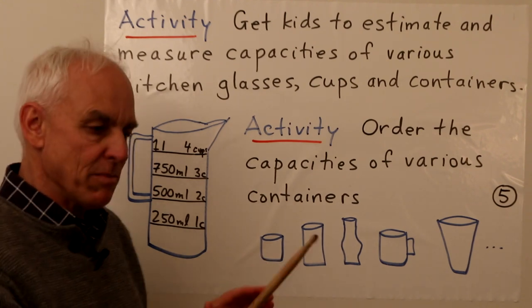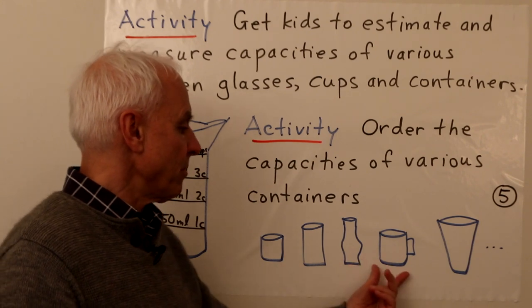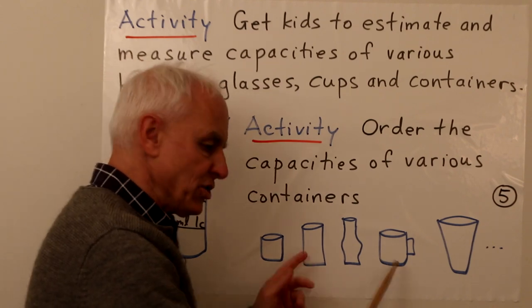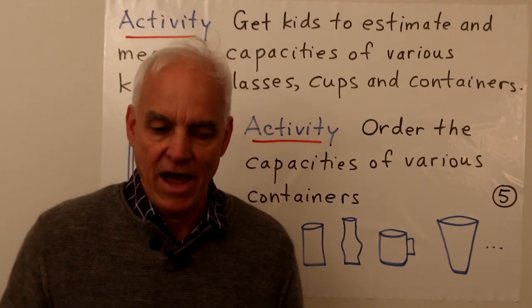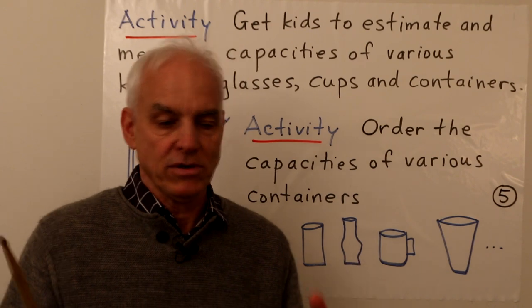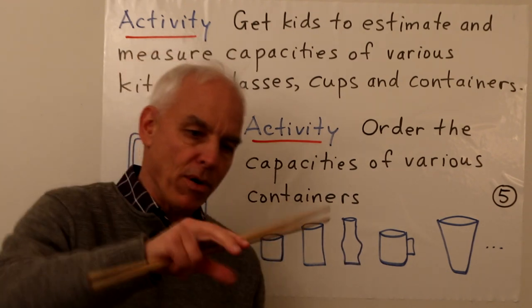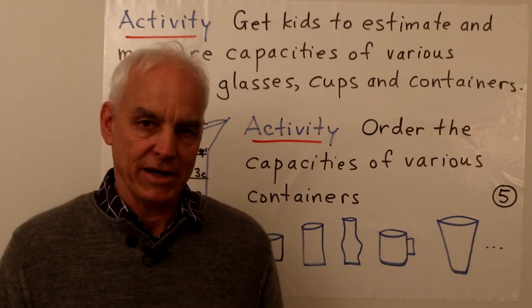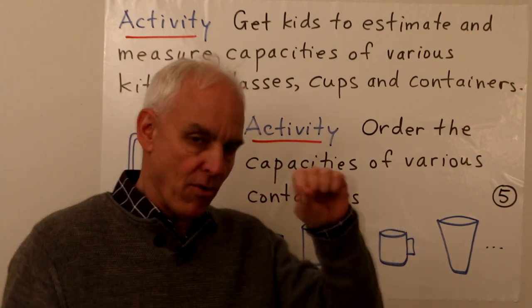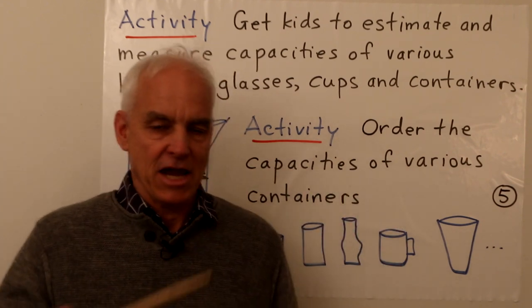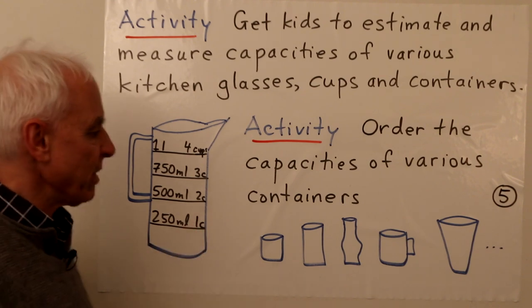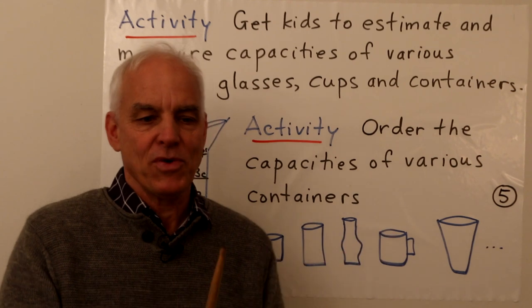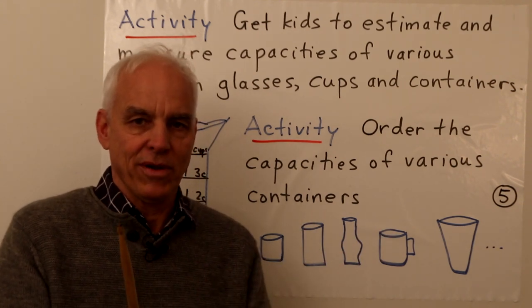Starting with the smallest volume and working up, to determine which of two containers has the greatest capacity, you fill them with liquid and pour into a measuring container to read the corresponding levels. It's a very direct activity — pouring water from one thing to another — quite fun, and it gives kids experience connecting the abstract numerical system with something tangible and physical.